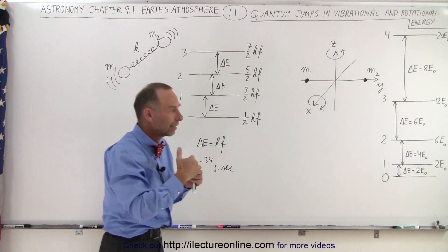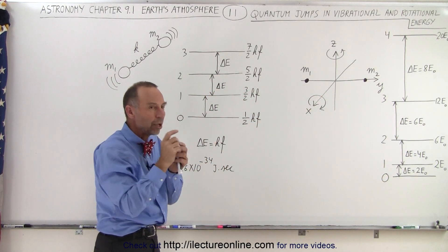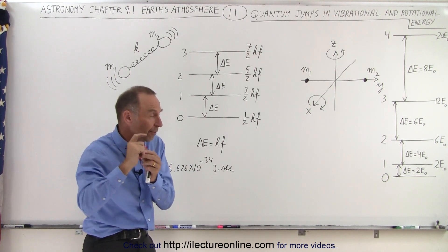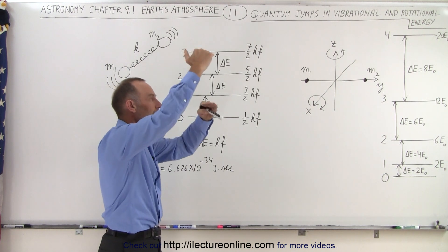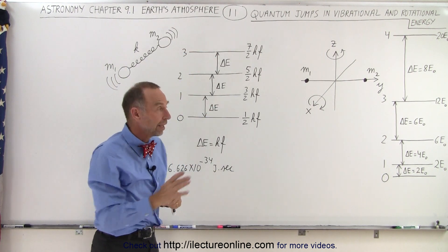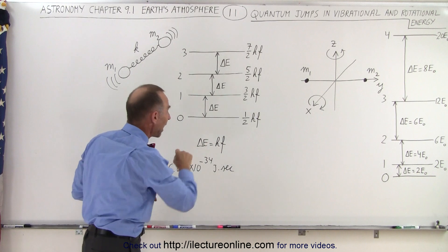So you can see the pattern that for each next quantum jump, you need again a quantum amount of energy, but the amount of energy you need increases as you go to higher and higher and higher rotational states. That is different than what we have here.